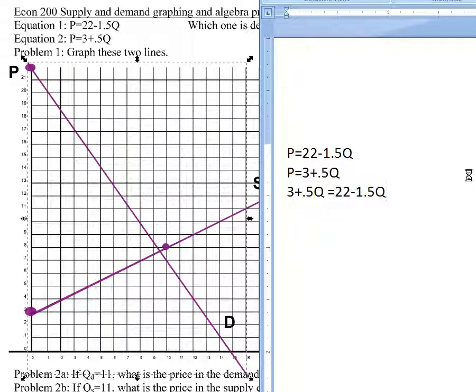And in order to solve those two equations for one unknown, we can subtract 3 from both sides and we get 0.5Q equals 19 minus 1.5Q. And then we can add this 1.5Q to both sides to bring it to the other side. And 1.5Q plus 0.5Q is going to give us 2Q. So we got 2Q equals 19. Divide both sides by 2, Q is going to be equal to 9.5.